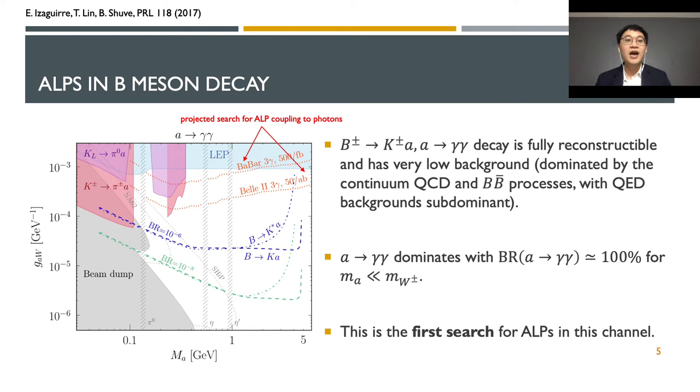In this search, axion-like is assumed to couple with SU2 gauge field. Then we look for axion in the B-meson decaying to K-on and axion, and then axion decaying to a pair of photons. This process is fully reconstructible and has very low background which are dominated by the continuum QCD and B-Bbar processes with the QED backgrounds subdominant.